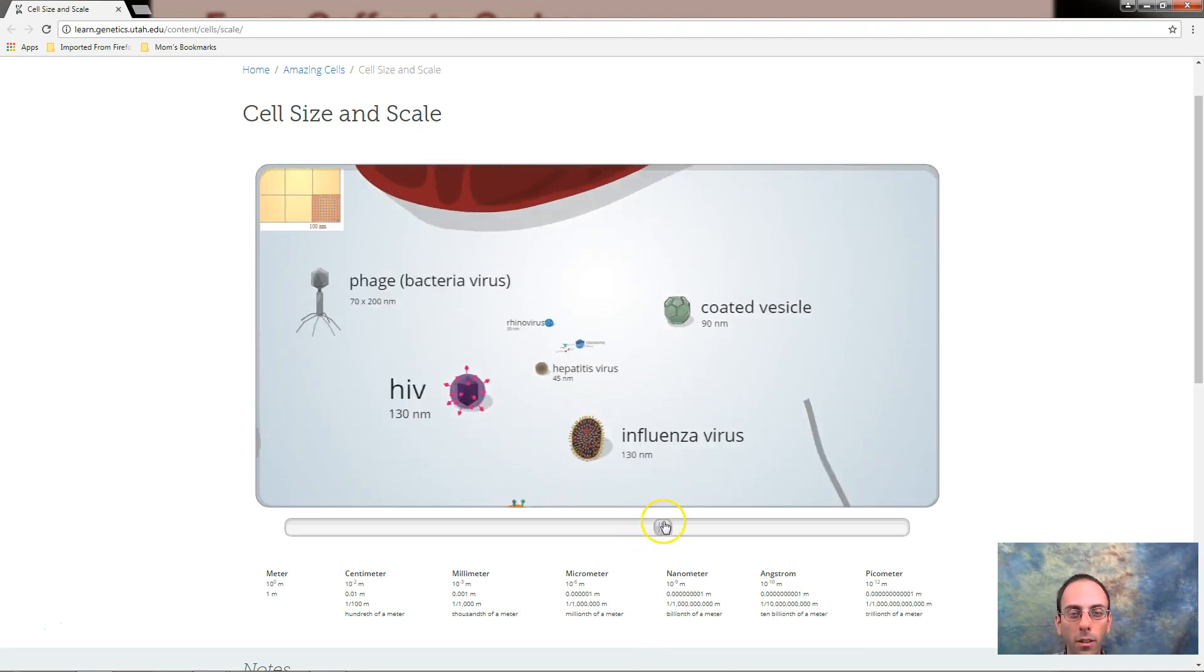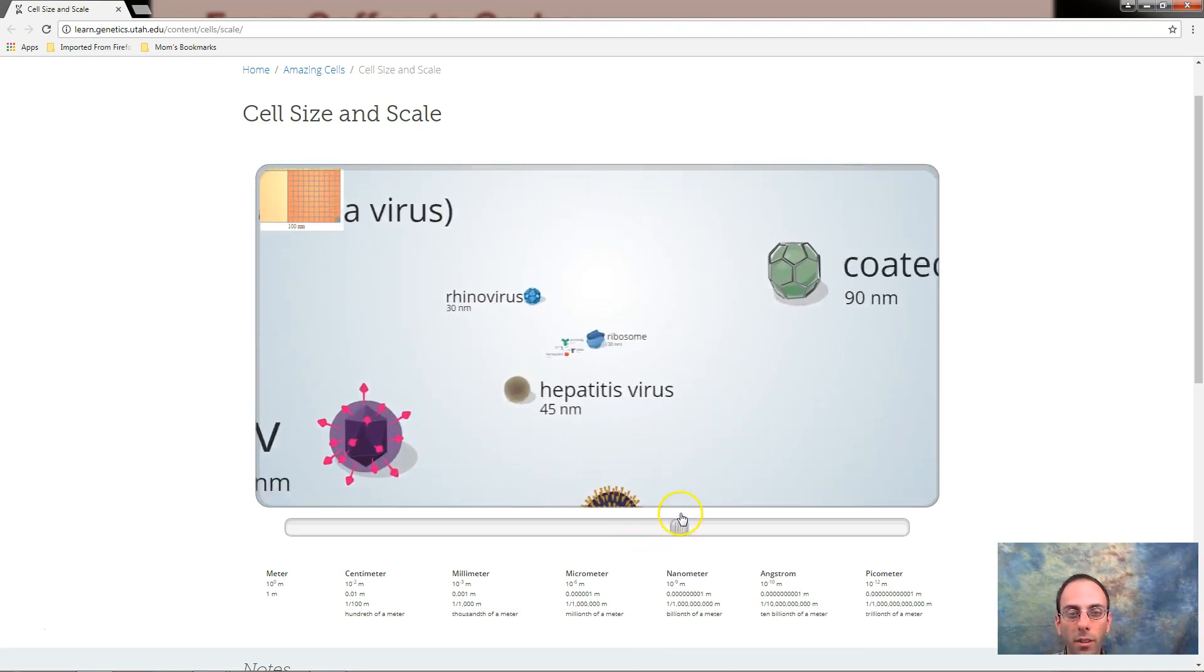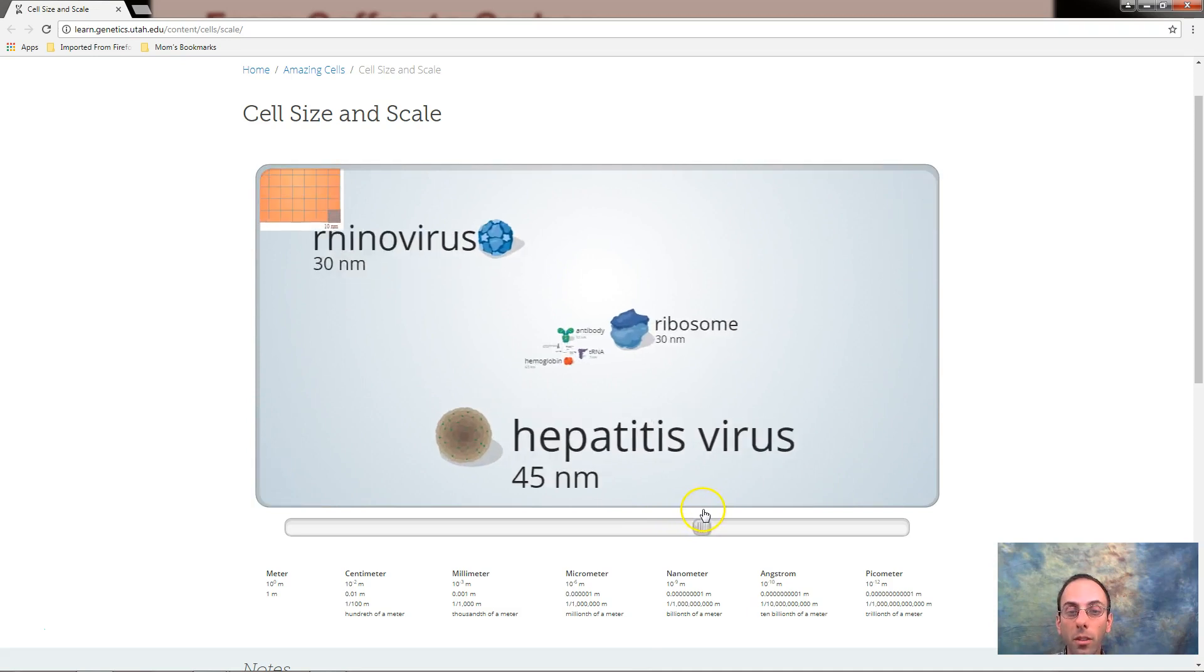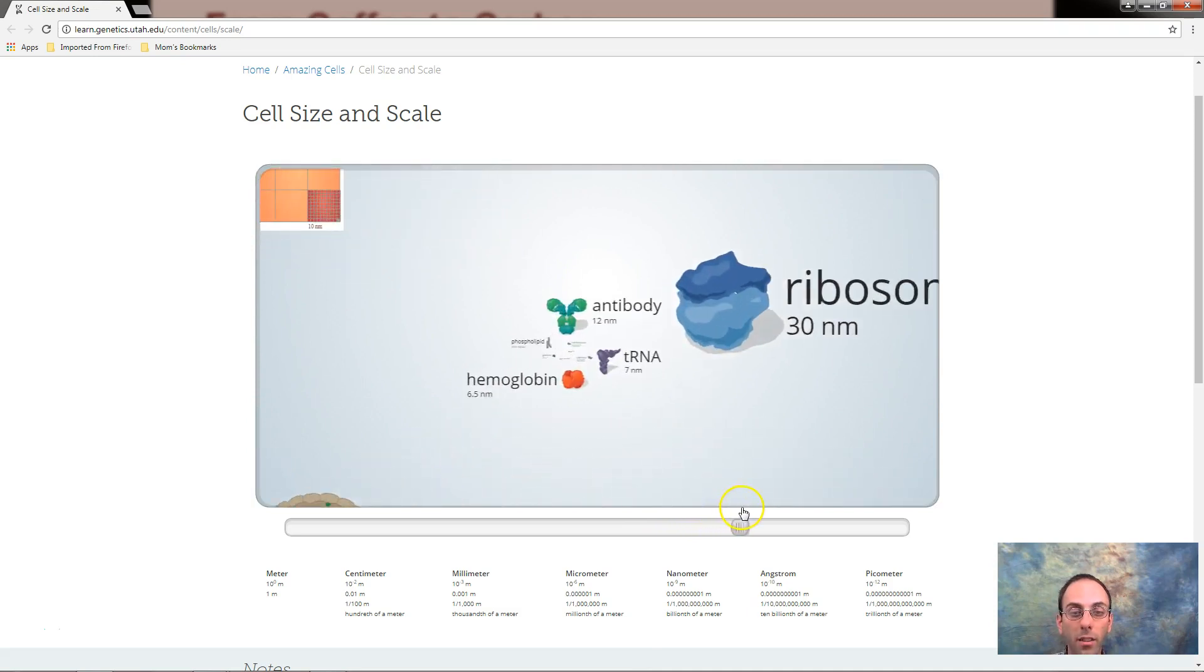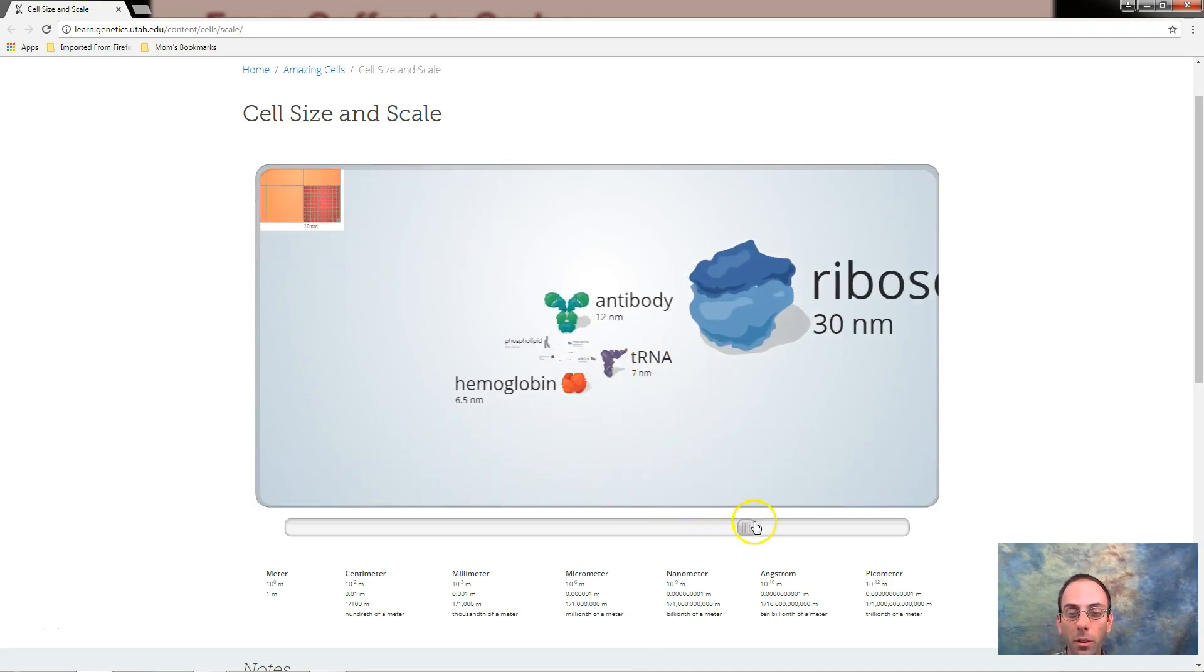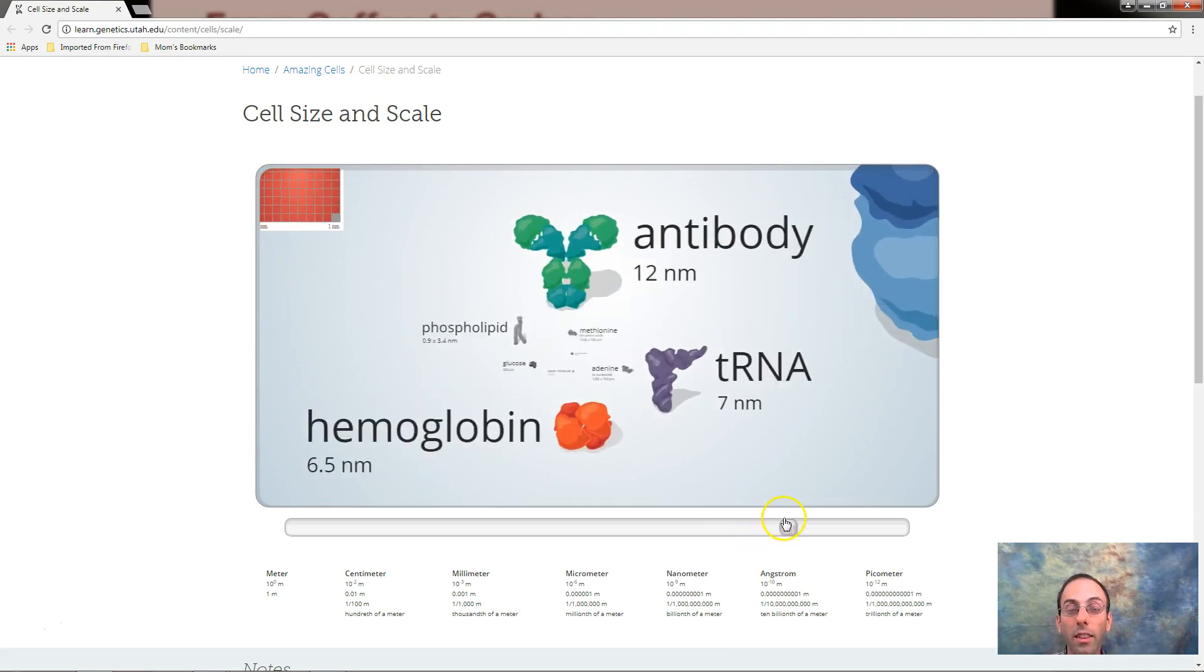But wait, there's more. Hepatitis virus. Ribosomes. Antibodies. tRNA. Hemoglobin. Yes it gets even smaller.